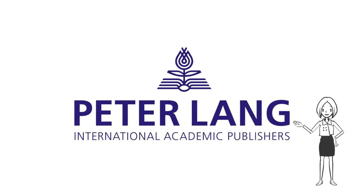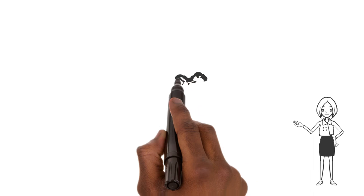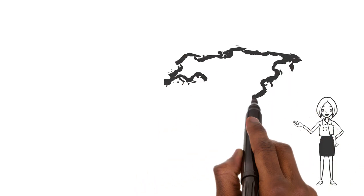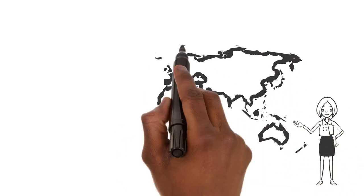Peter Lang has specialized in high-quality academic publications for the humanities and social sciences for almost 50 years now. Our headquarters in Bern, Switzerland, oversees the operations of our publishing offices throughout Europe, the UK and the US.